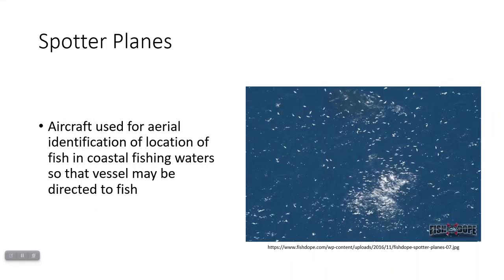Some fishing companies use spotter planes — someone flies a plane over the water looking for signs of fish schools. Seabirds tend to congregate where there's plenty of food, so where you see a lot of birds congregating and diving over the open ocean, that's where fish are likely to be. The spotter can then radio the location to a fishing vessel, which comes into the area to catch those fish.